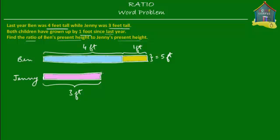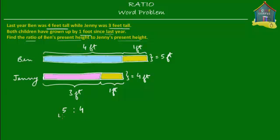Now Jenny also grew up by one extra foot since last year, so Jenny is also one foot taller. This is one foot and her present height is three feet plus one foot, which would be four feet. So Ben is five feet tall and Jenny is four feet tall. The ratio of Ben's present height to Jenny's present height is simply five to four — five feet is Ben's height and four feet is Jenny's height. That's the answer.